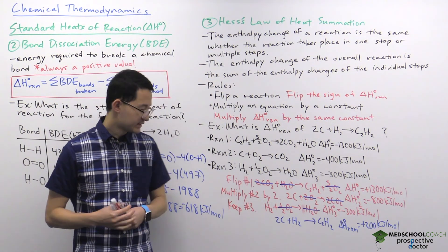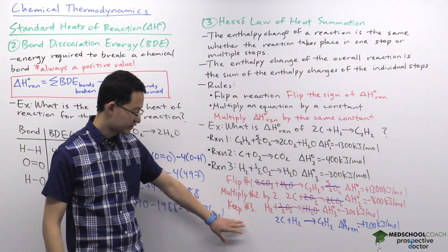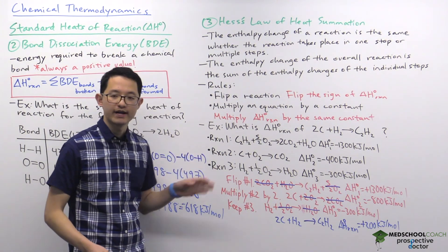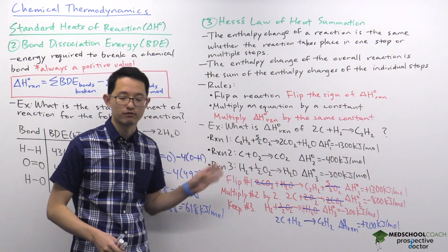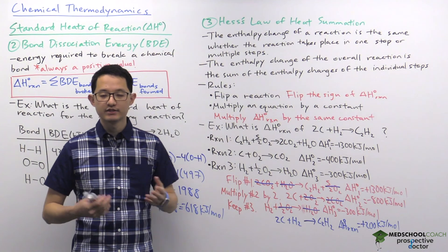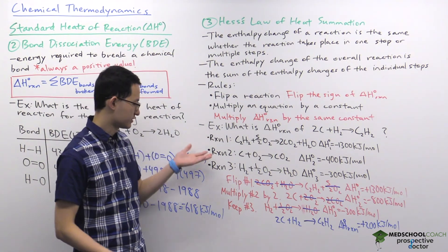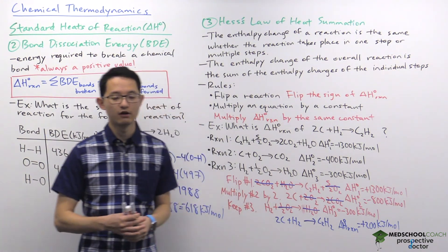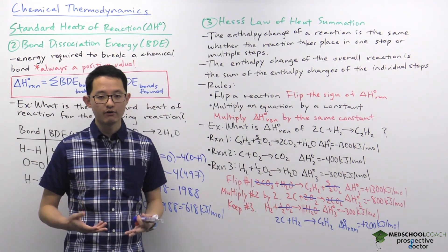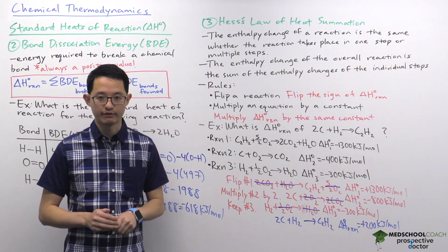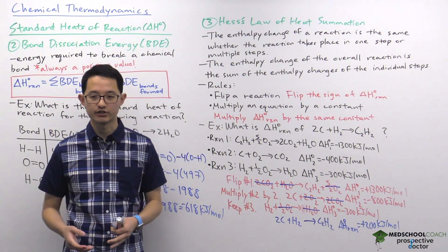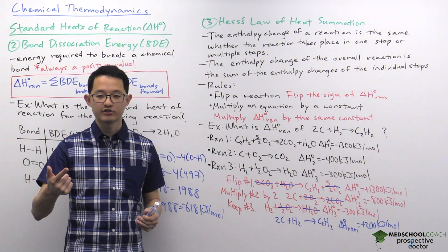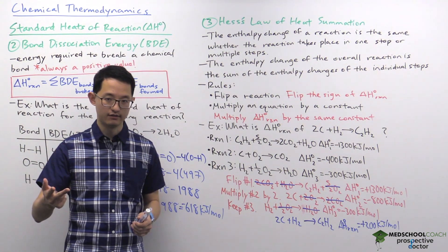That's how you do a calculation with Hess's law. Sometimes you'll only need two equations rather than three. So now you know how to calculate the enthalpy change of a reaction using three approaches: heat of formation, bond dissociation energies, and Hess's law.